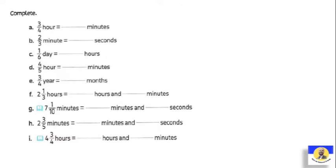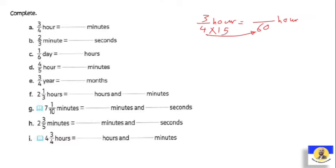Three quarters of an hour equals how many minutes? Since we're going from hour to minute, and one hour has 60 minutes, we take three quarters and make an equivalent fraction with denominator 60. To get from 4 to 60, we multiply by 15, so 3 × 15 = 45. Therefore 45/60 hour equals 45 minutes. Once the denominator matches the unit we want, the numerator gives us our answer.